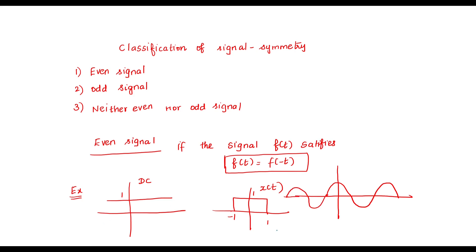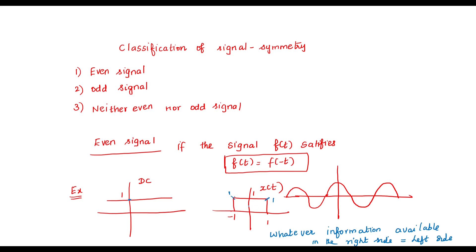Another simplified explanation of the even signal is: whatever information present in the right side, the same information is available in the left side. For this waveform, see here — at t=1, the value is maximum 1; at t=-1, the maximum value is also 1. The same information is available on both sides. Positive information on the right equals positive information on the left.